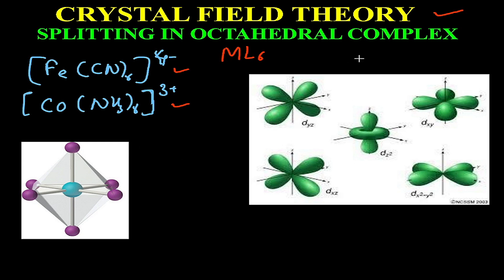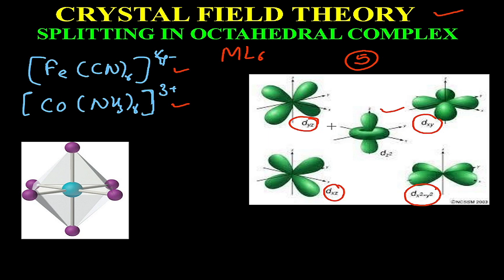When talking about d orbitals, we know that the degeneracy of d orbitals is five: dxy, dyz, dzx, dx²−y², and dz². Among these, dz² and dx²−y² are oriented along the axis — dx²−y² lobes along the x and y axes, and dz² lobes along the z axis. The remaining three orbitals — dxy, dyz, and dzx — are oriented between the axes, in the plane between the axes.